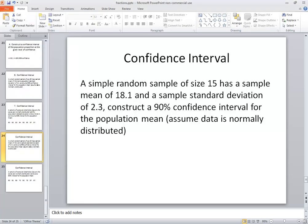Here's the problem. A simple random sample of size 15 has a sample mean of 18.1 and a sample standard deviation of 2.3. Construct a 90% confidence interval for the population mean.